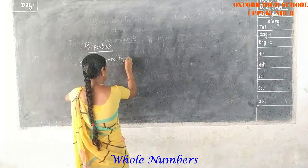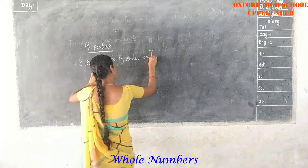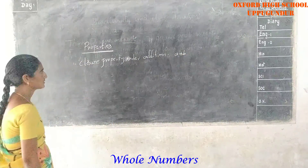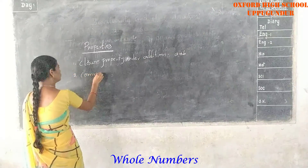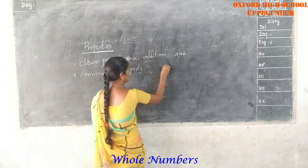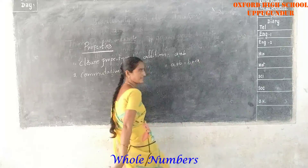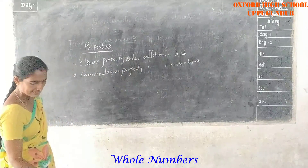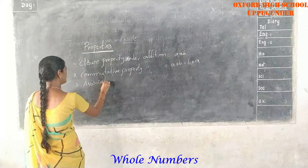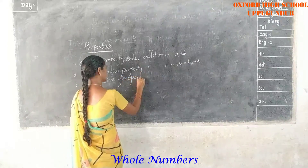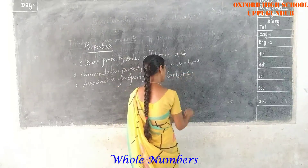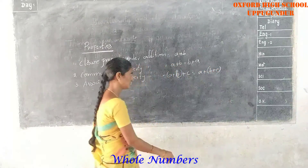Closure property under addition: A plus B. Commutative property under addition. Associative property under addition: A plus (B plus C) is equal to (A plus B) plus C.